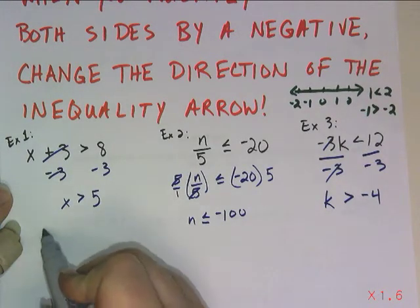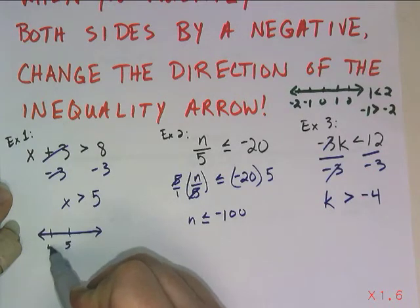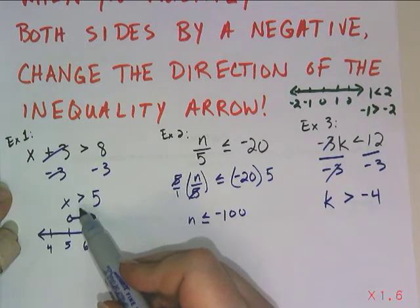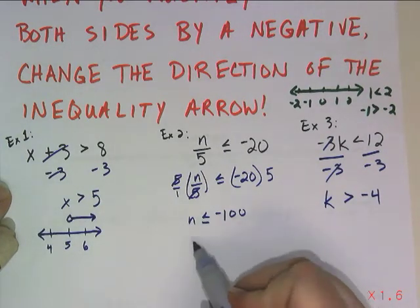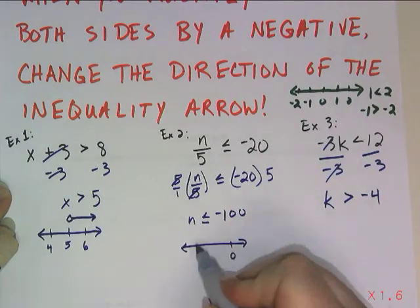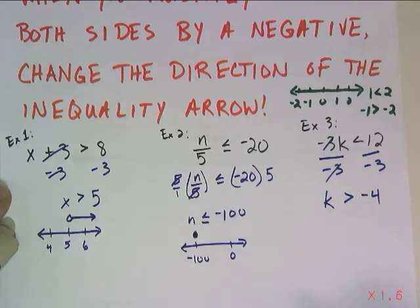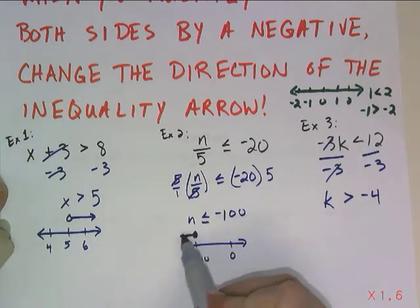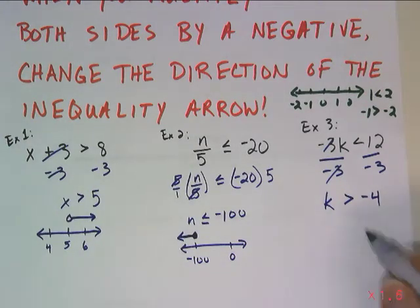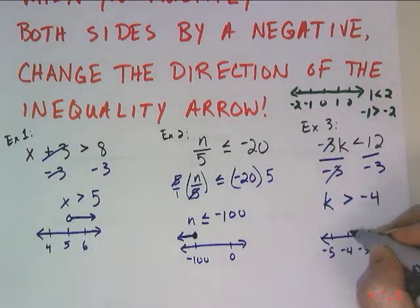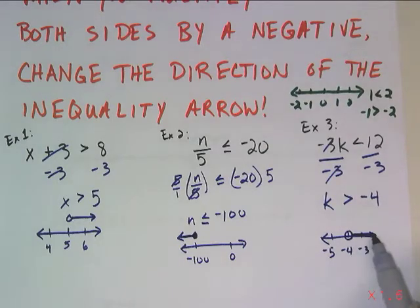To graph these solutions: x > 5 gets an open dot on 5 with an arrow to the right. For n ≤ -100, I place 0 and negative 100 to its left, use a filled-in dot since it can equal negative 100, and shade left. For k > -4, I use the other type of number line with an open dot on negative 4 and shade to the right, since values get bigger going right.